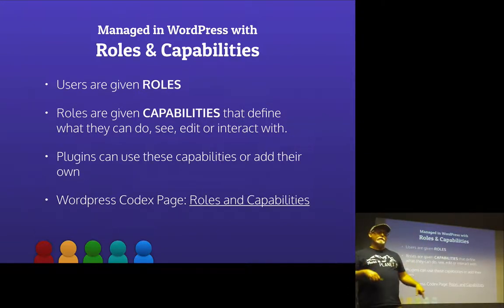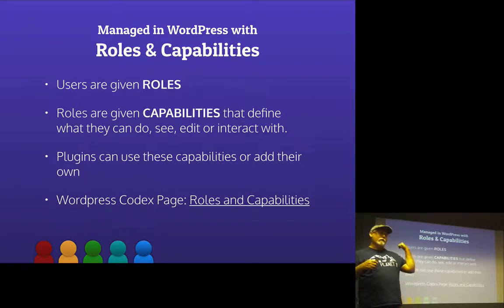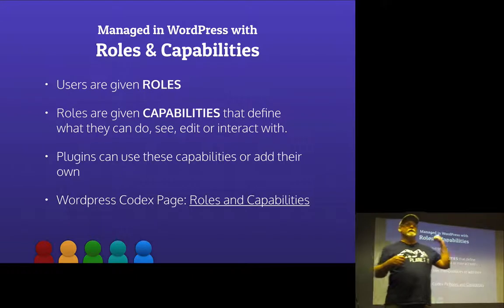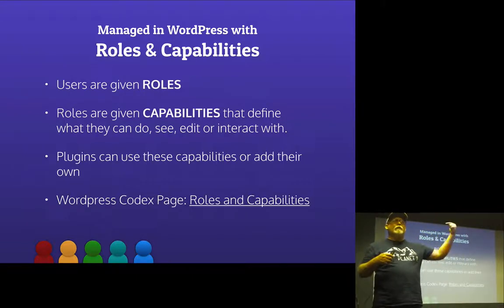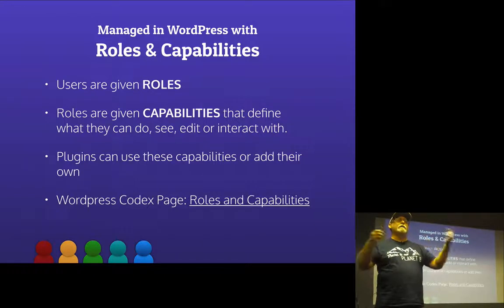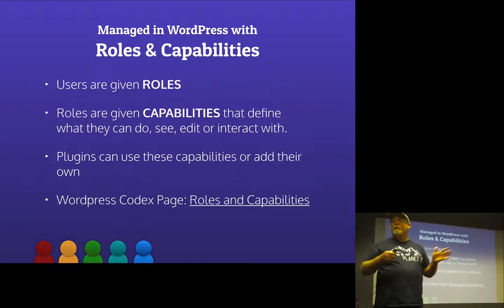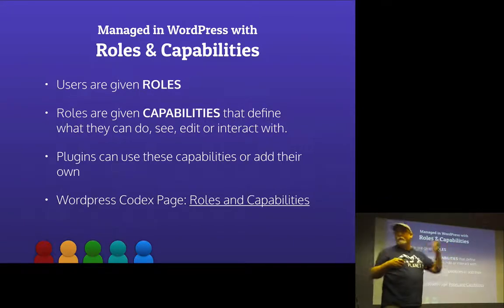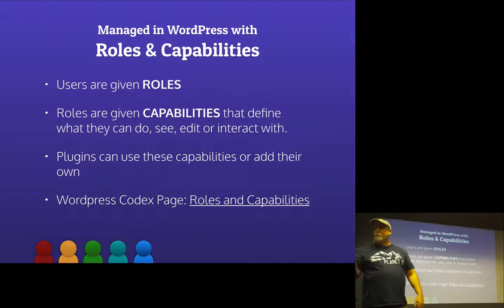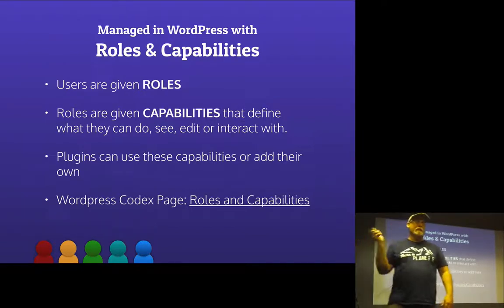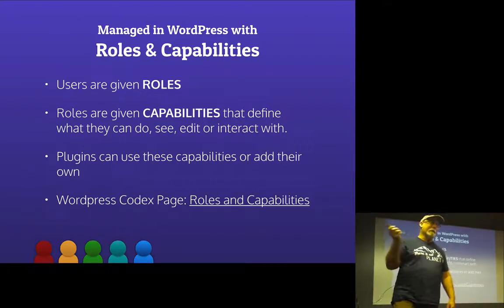Plugins that you install on WordPress also can use these capabilities to determine what you can do. Some plugins say: does this person have the right to edit other users? So they must be an admin. But plugins can also create their own capabilities. The WordPress Codex page — I've got a link here — is very informative and explains what every single one of the capabilities does.